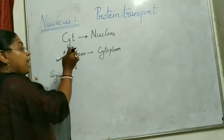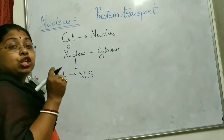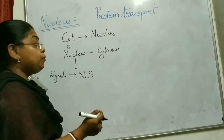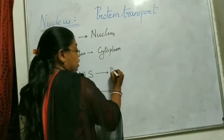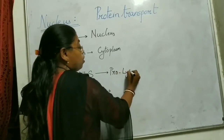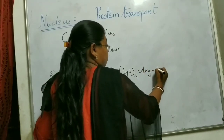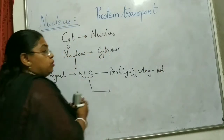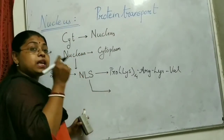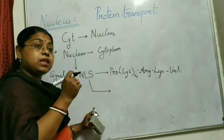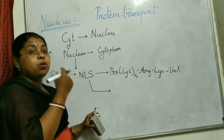The protein will have a signal, and that signal is known as NLS — Nuclear Localization Signal. This nuclear localization signal is of two types. The first type is a chain of proline, arginine, lysine, and valine. If this signal is present in the protein, it tells that protein it has to move inside the nucleus.